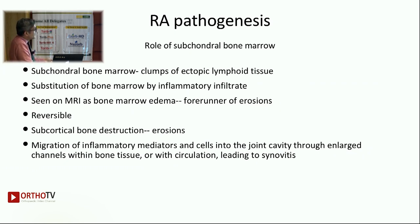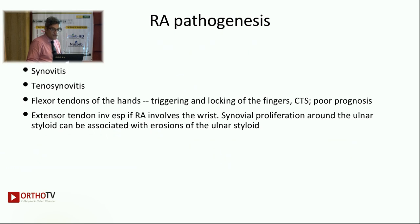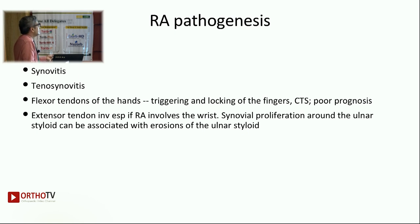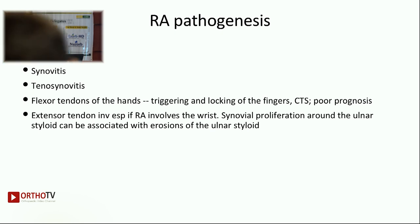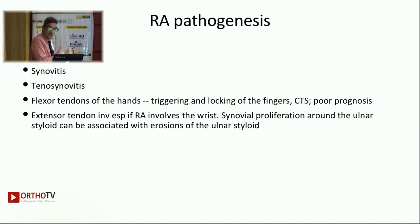The migration of inflammatory mediators and cells into the joint cavity from subchondral bone marrow ultimately leads to inflammation of the synovium. There are multiple ways through which inflammation ultimately homes in. Clinically, what we see in patients: synovitis, tenosynovitis — flexor as well as extensor tendons can get involved — flexor tendons of the hand causing triggering and locking of fingers, carpal tunnel syndrome which carries a poor prognosis, and extensor tendon involvement especially at the wrist, where synovial proliferation around the ulnar styloid is associated with erosions. This is how the entire process pathogenetically works. I will now hand over to Parag to go ahead.